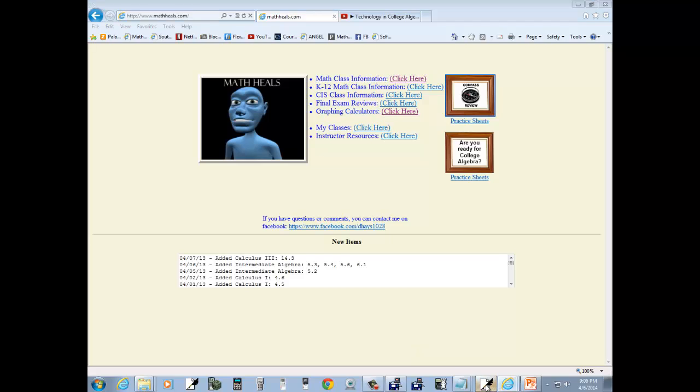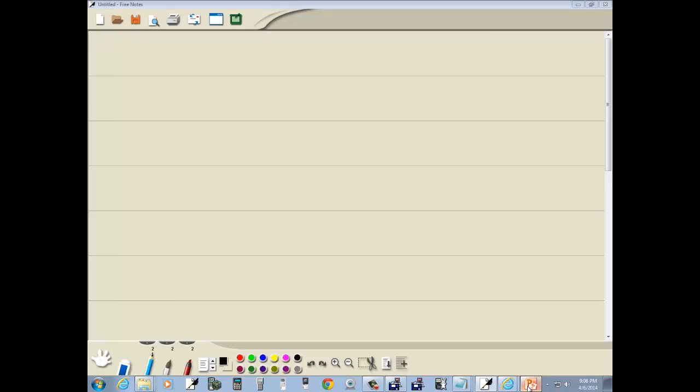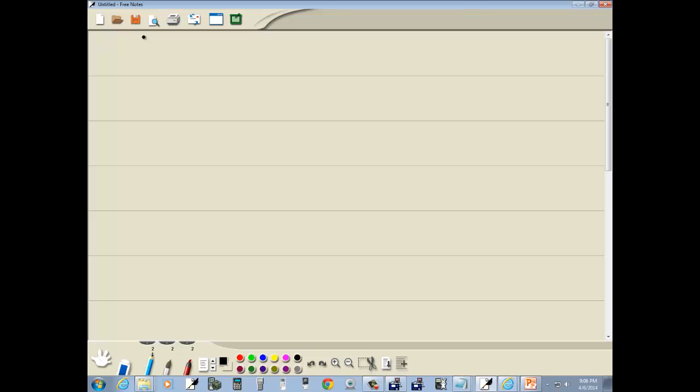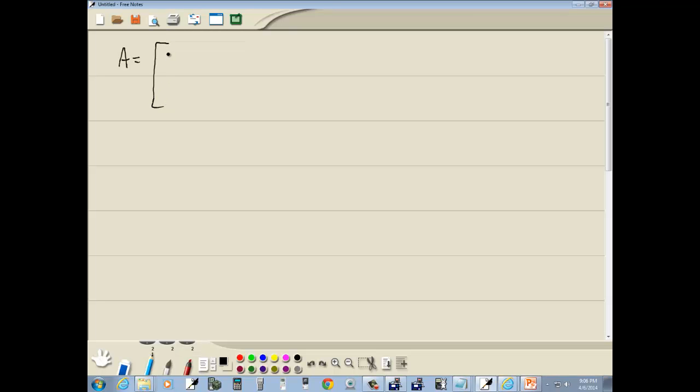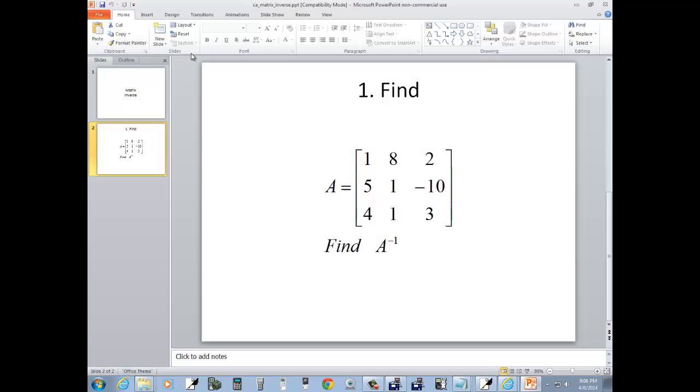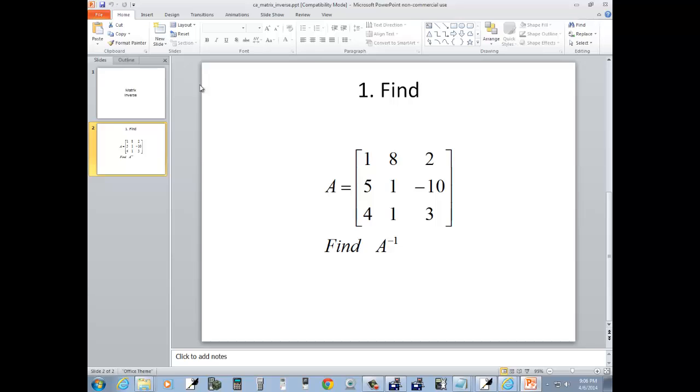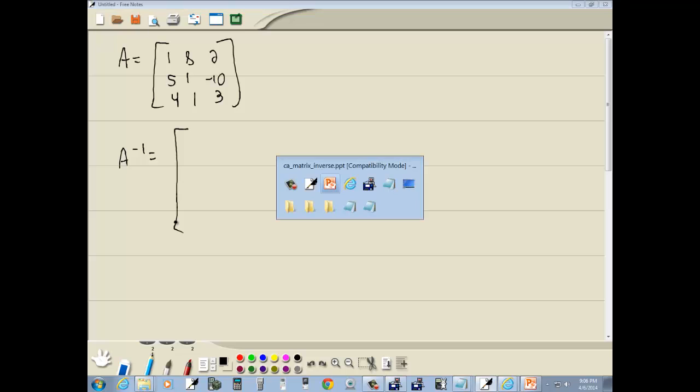Well, let's take a look at finding the inverse of this problem here. So we've got A is equal to 1, 8, 2, and 5, 1, negative 10, and 4, 1, 3. Well, first thing we need to do is we need to go input this matrix in. So let's do that.